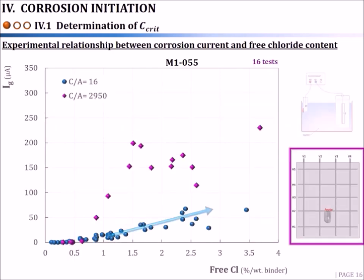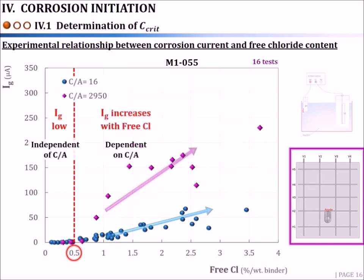Adding results obtained with a higher cathode-to-anode ratio of almost 3000: for chloride levels lower than 0.5%, the current was also low and negligible, meaning the current is independent of the cathode-to-anode surface ratio. However, for higher chloride concentrations, the current increases with free chlorides and also becomes higher when the cathode-to-anode ratio is higher, meaning the current becomes dependent on the ratio. This clear transition highlights the existence of a chloride threshold effect that could be associated with a value of 0.5% per weight of binder.